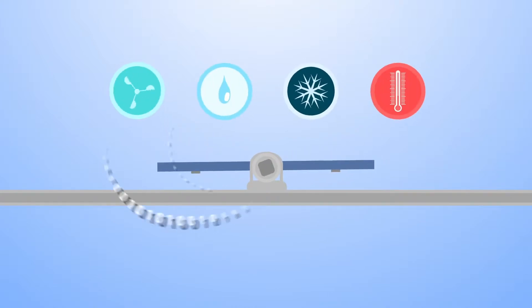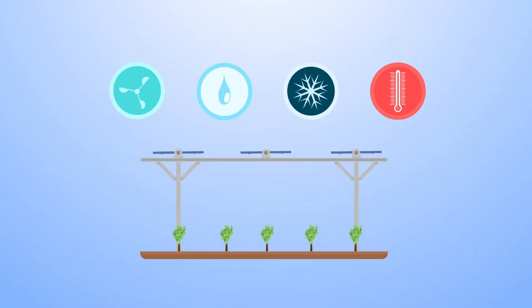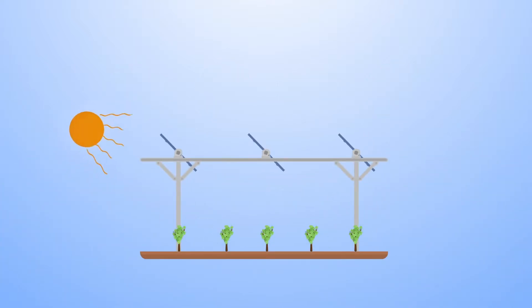Panels are controlled in real time through complex algorithms and agronomic models. It is therefore possible now to develop crop growth and meet the needs in terms of shade and sunlight.